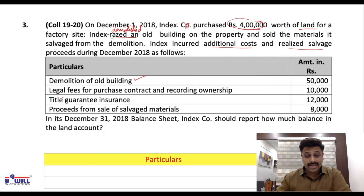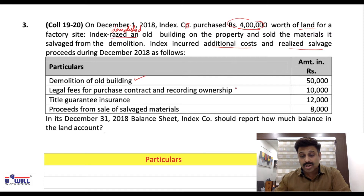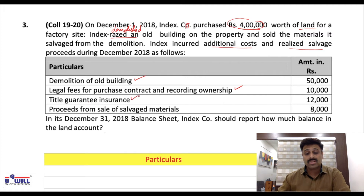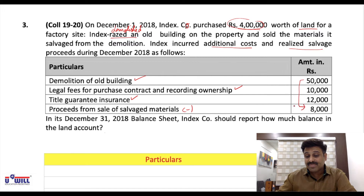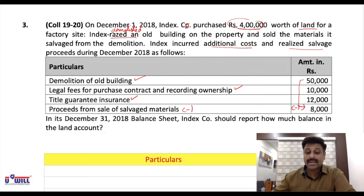Index incurred additional costs and realized salvage proceeds during December 2018. The 4 lakhs purchase price will be included first. Demolition of the old building cost 50,000 — that will be added. Legal fees for purchase contract and recording ownership will be added. Title guarantee insurance — to get ownership title guarantee — will also be added. Proceeds from the sale of salvage materials will be deducted.